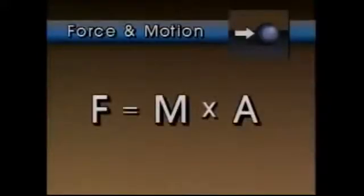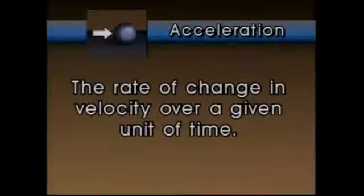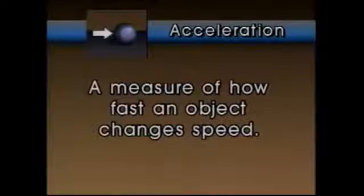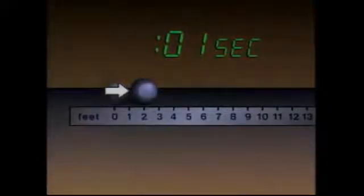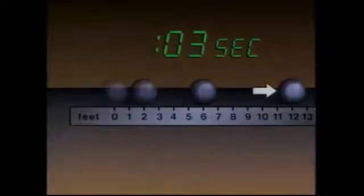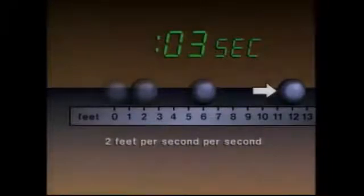The second law deals with applied force. Simply stated, the second law says that force F equals mass M times acceleration A. Acceleration can be defined as the rate of change in velocity over a given unit of time. A change in velocity may cause an object to either speed up or slow down, so basically acceleration is a measure of how fast an object changes speed. For example, as a result of an applied force, this ball accelerates from zero velocity to its peak velocity. If the ball moves two feet in the first second, four feet in the second, and six feet in the third, it travels an additional two feet for every second that passes — in other words, it accelerates at a rate of two feet per second per second.